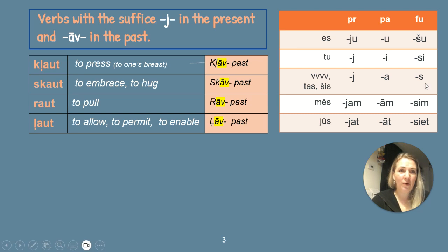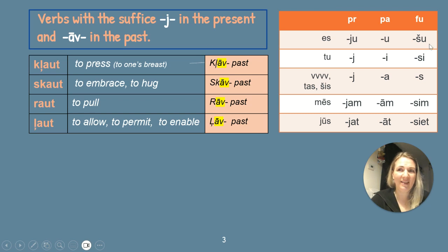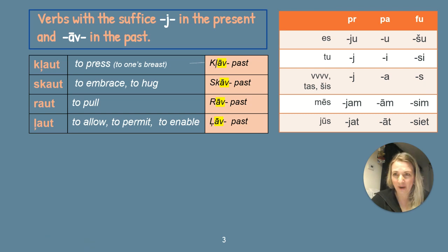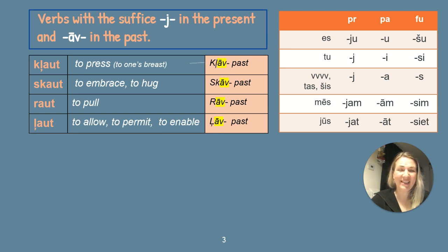In the future forms, as most of the time, we simply add new endings to the infinitive form — we lose the T and add new endings. Es kļaušu, skaušu, raušu, ļaušu. Tu kļausi, skausi, rauši, ļausi. Viņš kļaus, skausi, rauši, ļausi. Mēs kļausim, skausim, raušim, ļausim. Jūs kļausiet, skausiet, raušiet, ļausiet.